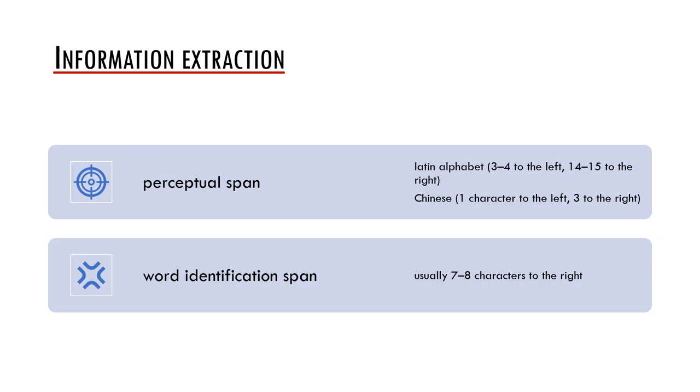There have been disputes to what extent do we really use the information above the word identification span during reading. However, while using eye tracking, we may automatically change certain letters outside the word identification span which are still in the perceptual span. If we do this, the reader will not consciously recognize it but he or she will typically slow down reading, which is a sign that the whole perceptual span is somehow important for reading.